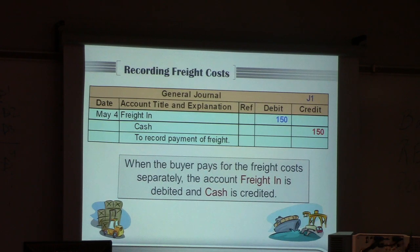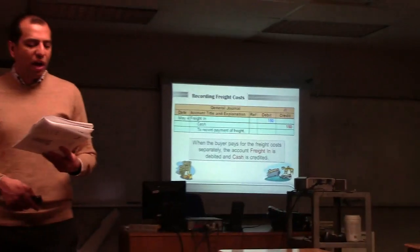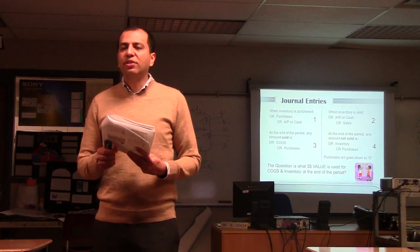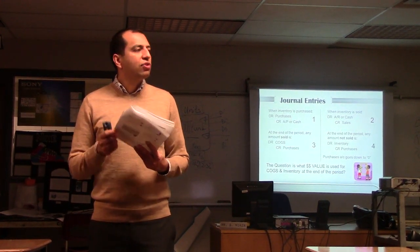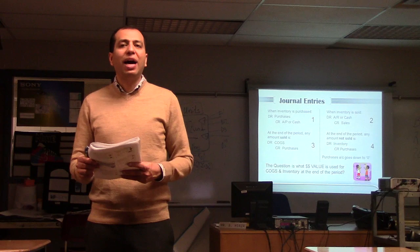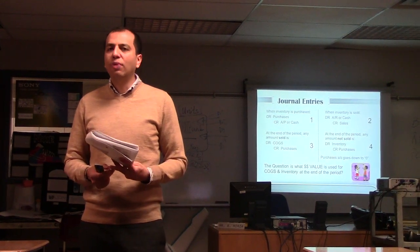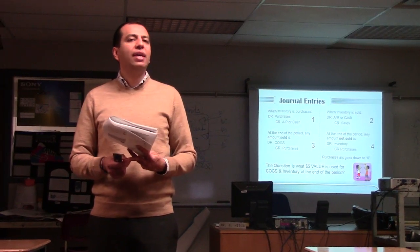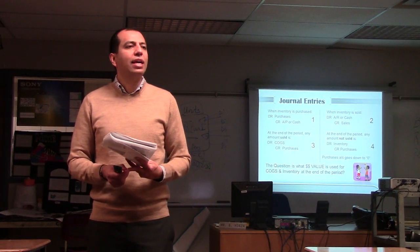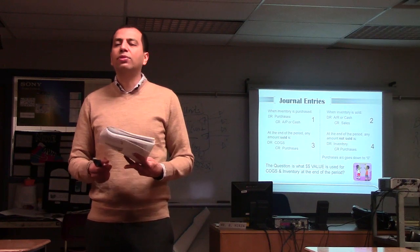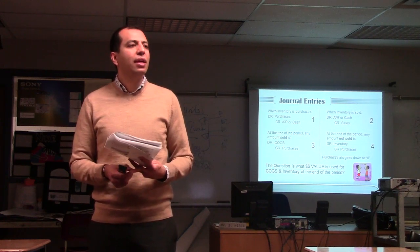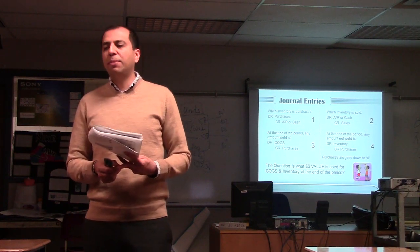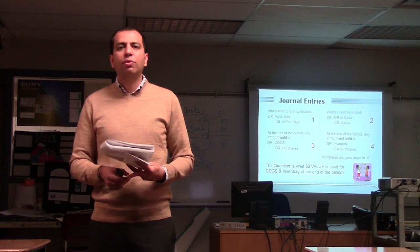To highlight once again: transaction one happens when you buy the products; transaction two happens when you sell the products; transactions three and four only happen at the end of the year — to take everything out of Purchases and put them either into COGS, which is an income statement account, or into Inventory, which is a balance sheet account. We'll stop here for today.